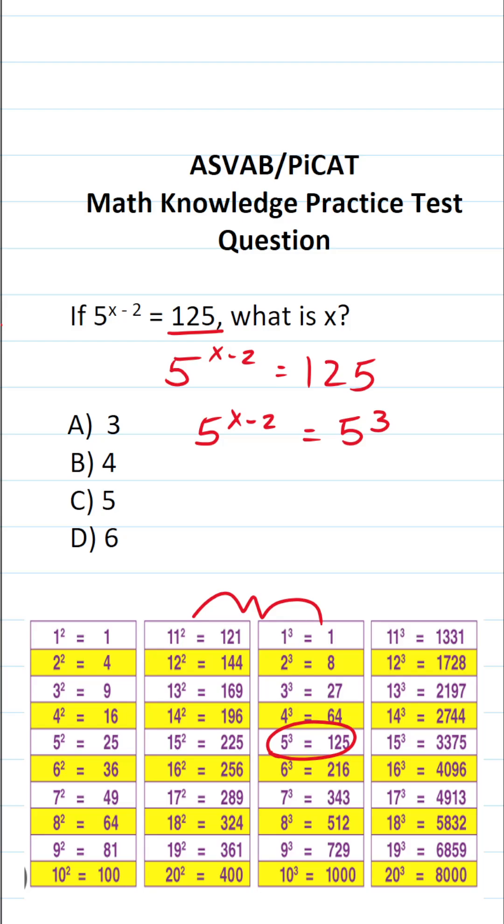All right, so now that these both have a base of 5, we can solve this one like this. We could write it to be x minus 2 equals 3. To solve for x, all we have to do is add 2 to both sides. This crosses out. This says x equals 3 plus 2, which is 5. So the answer to this one is 5.